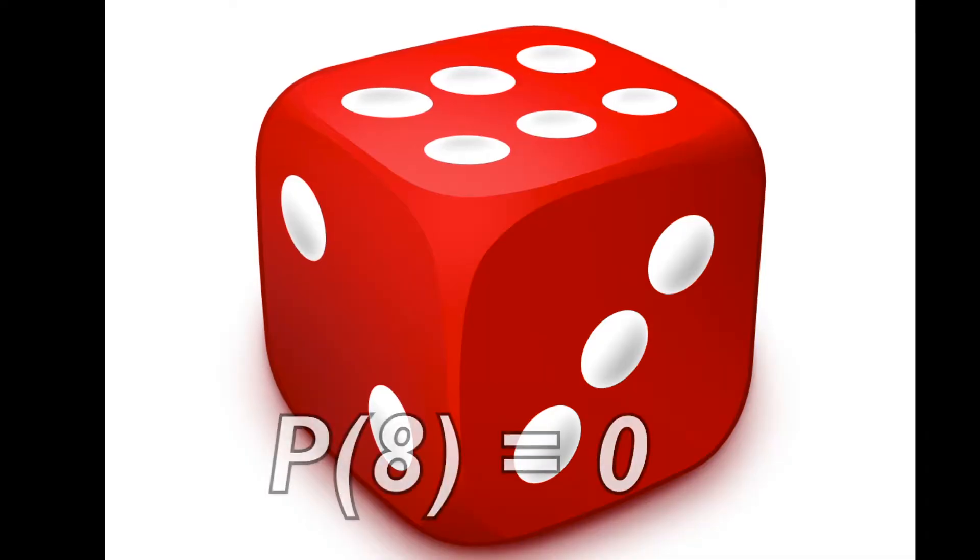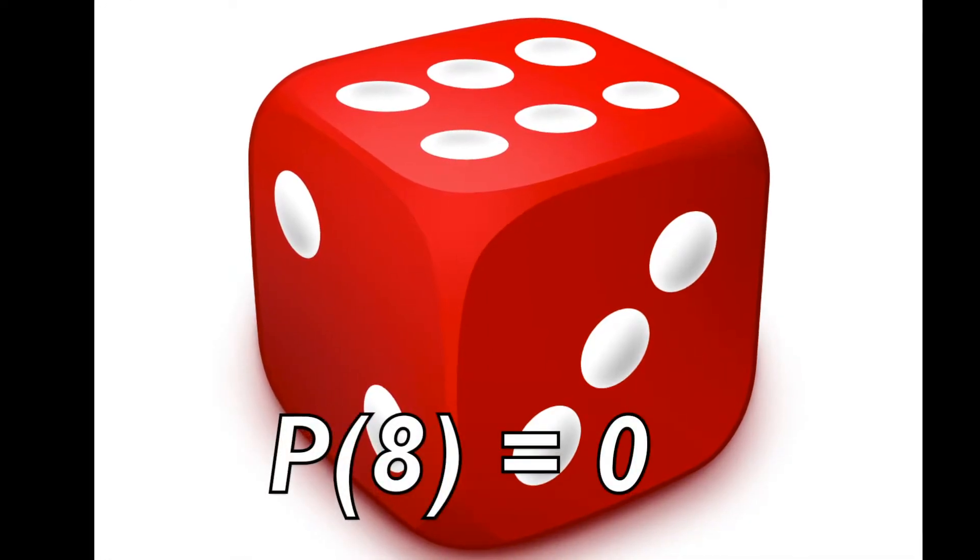Here are some basic probability rules. First, the probability of an impossible event is 0. For example, in a single roll of a six-sided die, the probability of getting an 8 is 0, since there is not an 8 on a six-sided die.